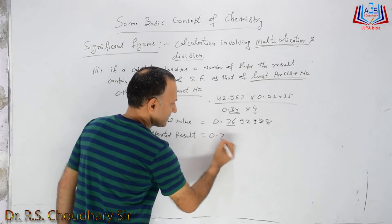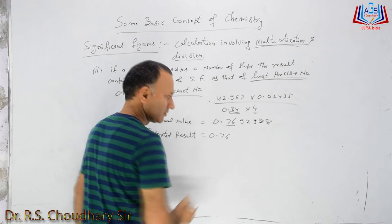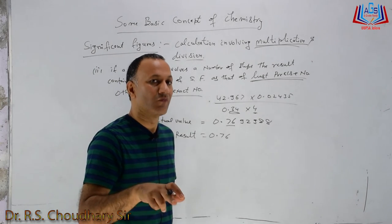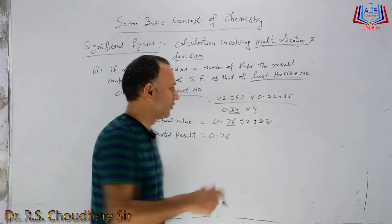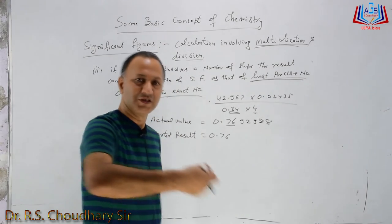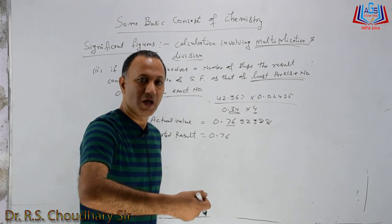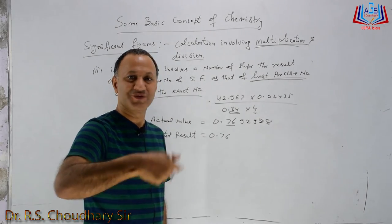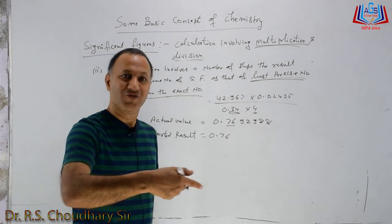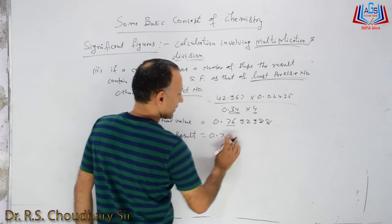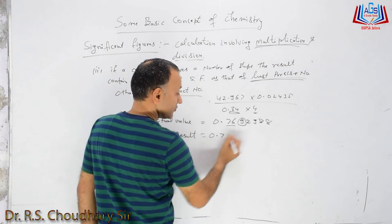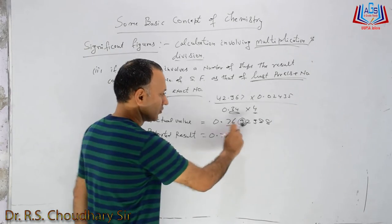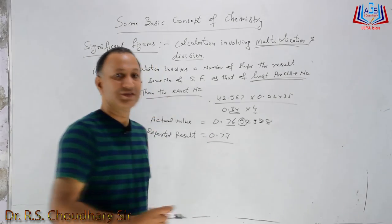So we take up to 2 significant figures: 0.7 and then we apply rounding off. If the next digit is more than 5, we add 1. The next digit is 9, which is more than 5, so we add 1. The answer becomes 0.77.